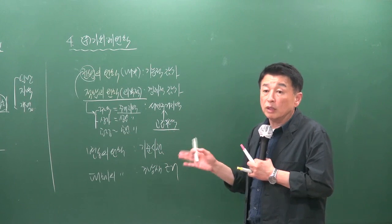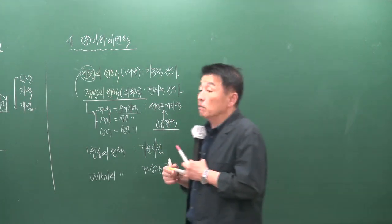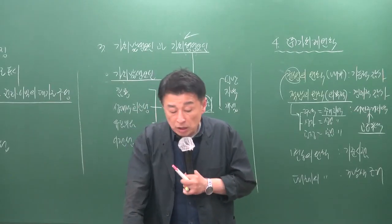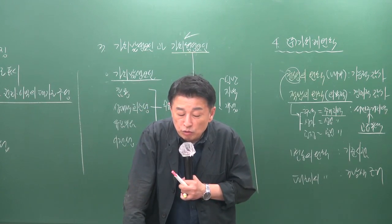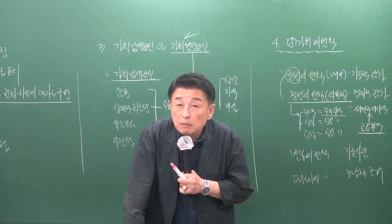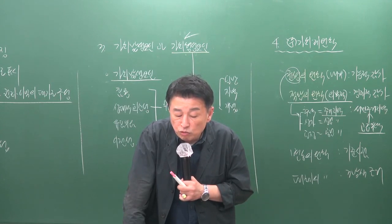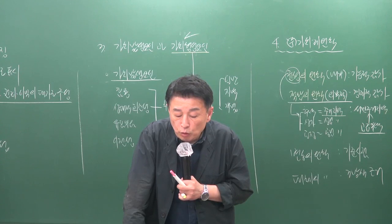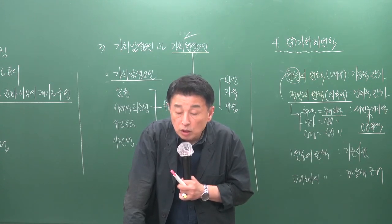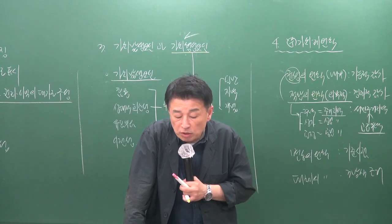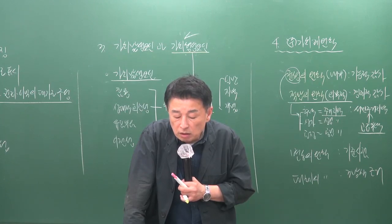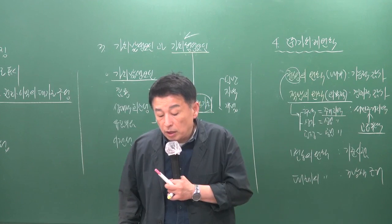최근 가장 많이 활용되는 것은 균형의 원칙과 적합의 원칙입니다. 9번 문제에서 감정평가 시 기준 시점이 시점 수정의 이론적 근거가 되는 것은 변동의 원칙이고, 부동산의 유용성이 최고로 발휘되기 위해 지역 환경과 조화롭게 균형을 이루어야 한다는 것이 적합의 원칙입니다. 건부지와 건물에 부적합해서 비례되는 기능적 감가의 판단 근거는 균형의 원칙입니다.